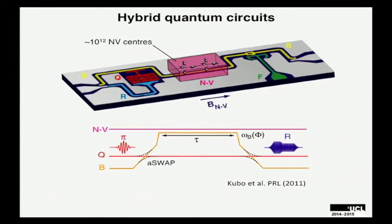There's naturally a lot of interest in integrating other types of quantum systems into this circuit QED architecture. One example is coupling an ensemble of spins—in this case, nitrogen-vacancy centers in diamond—to a microwave resonator, to create a quantum memory. But in our work, we're really interested in trying to couple single spin qubits to these microwave cavities.